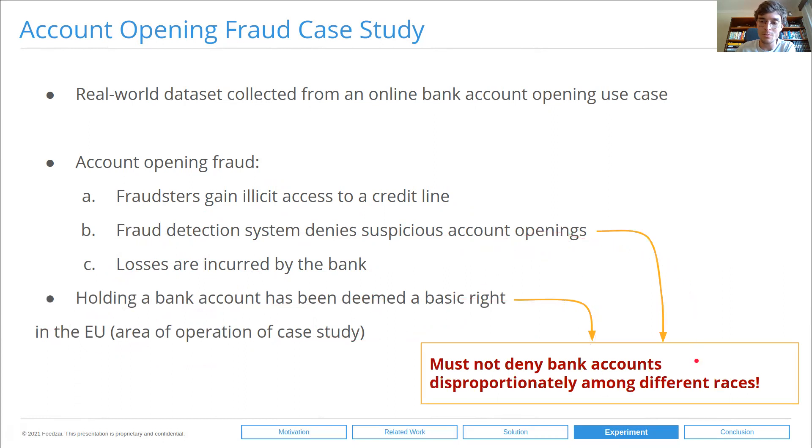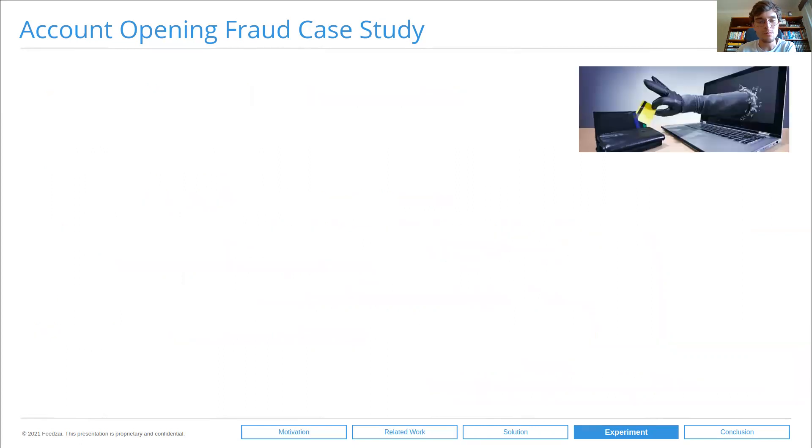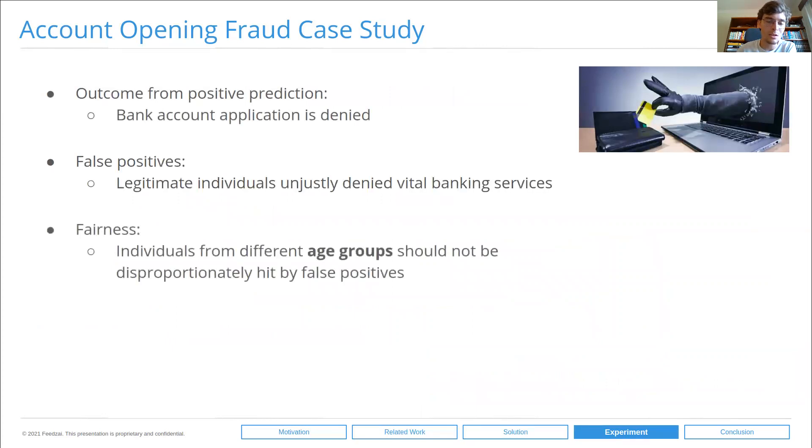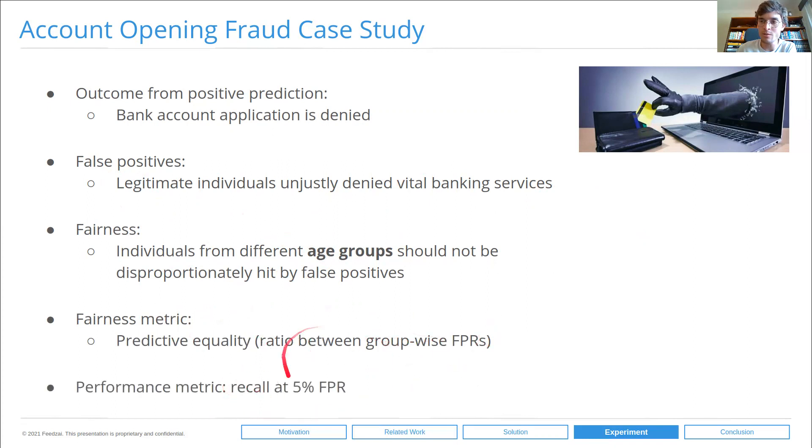But these two points are in conflict because if we're denying suspicious account openings, sometimes they'll be right, sometimes they'll be wrong. When they are wrong, they are false positives. We'll be denying legitimate individuals access to a bank account, which is a basic right. So what we have to guarantee is that these false positives do not hit particular groups the hardest. Our fairness target will be that individuals from different age groups, we could use any other protective group, should not be disproportionately hit by false positives. A false positive is a legitimate individual that is unjustly denied vital banking services. The fairness metric will be the ratio between group-wise false positive rates and the performance metric will be recall at 5% false positive rate.